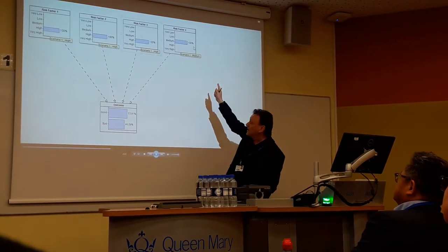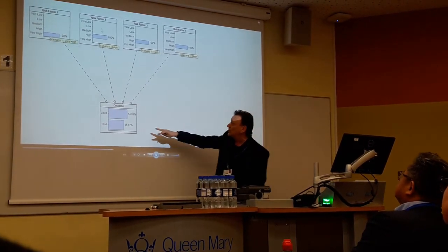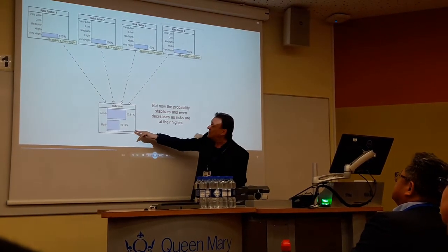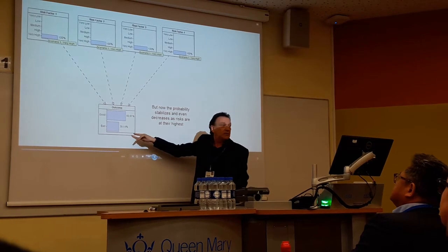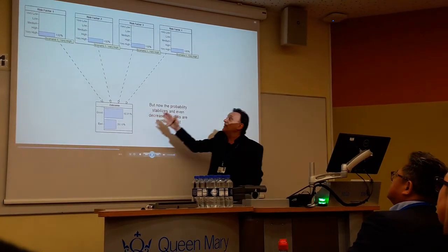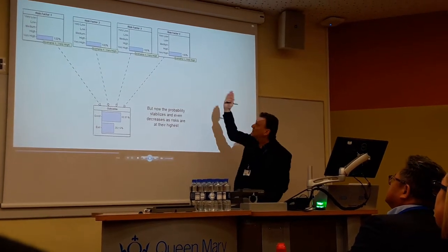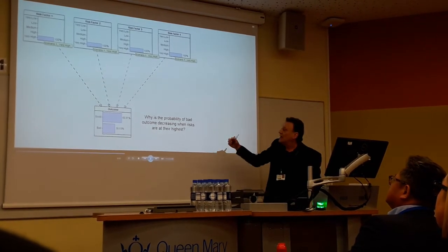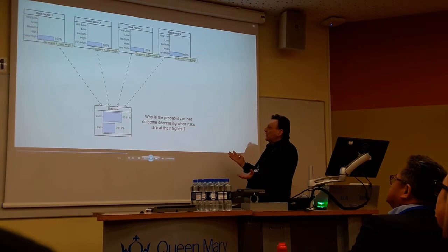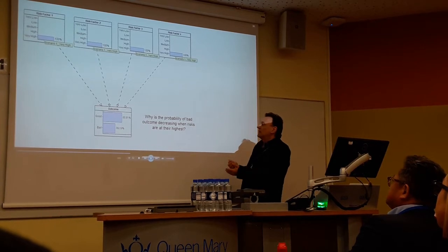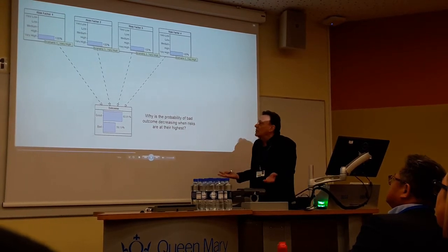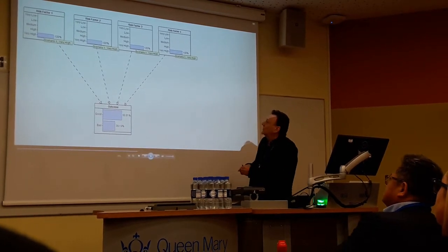But now something weird happens. At the highest level, the outcome starts to stabilise and actually comes down. So in the worst case, when the risk factors are worst, how has the outcome actually improved rather than got worse?